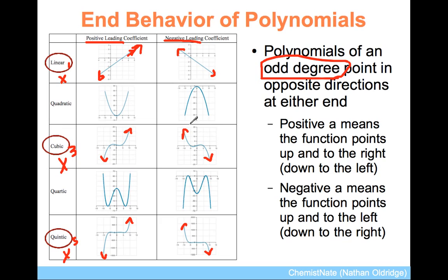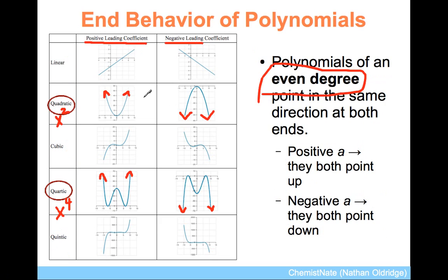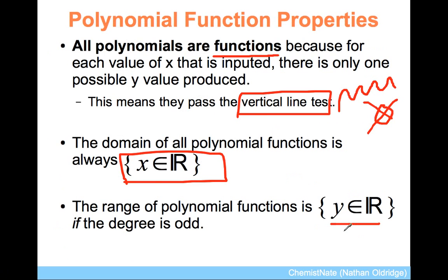An even degree polynomial, if I go one previous, will have a minimum or a maximum, and therefore their ranges are not y element of R. So, the range is y element of R, or y is an element of all real numbers if the degree of the function is odd.